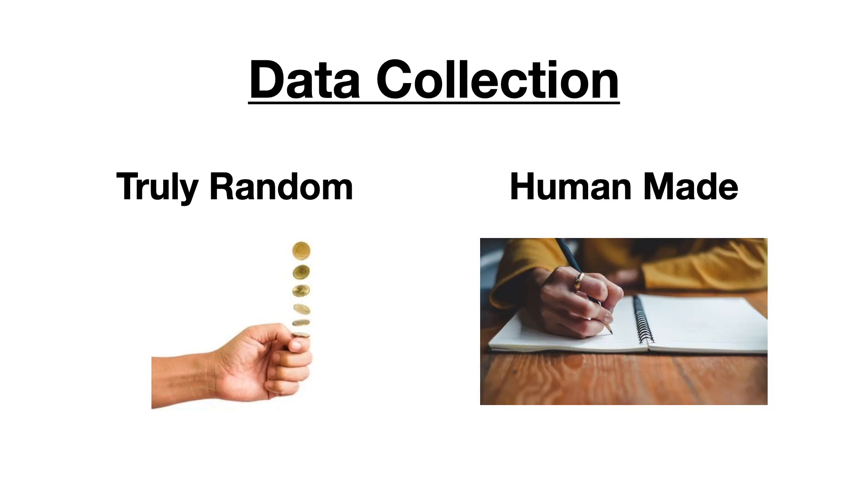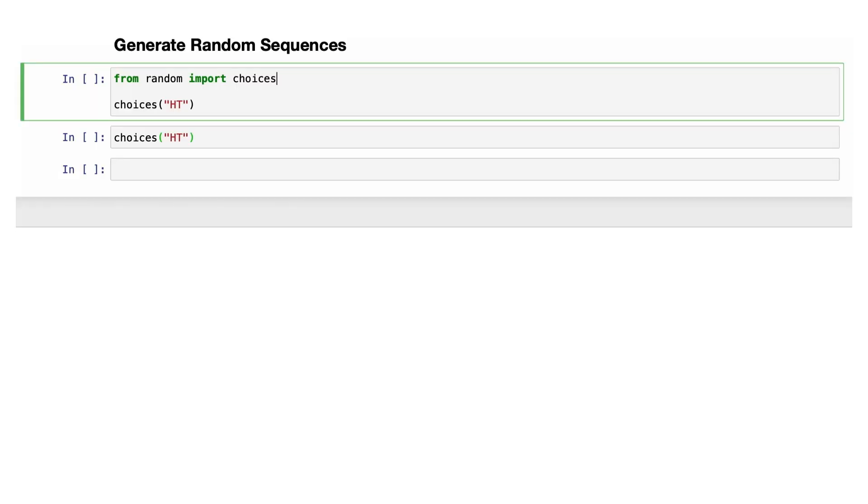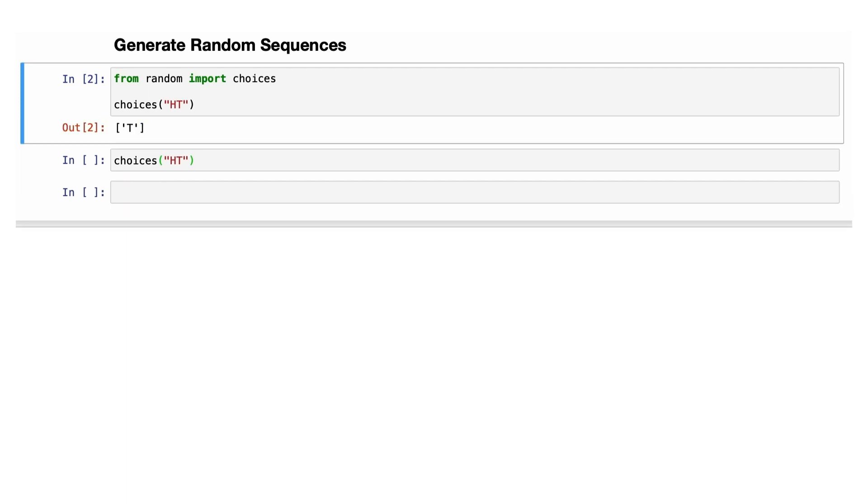The first step here was data collection. I needed to have both truly random sequences and sequences that were made up by a person. The truly random sequences are the easy part. There's a function called choices from the random library in Python that's able to choose a random element from a string or a list. For example, if we pass in an H and a T into this function, it will choose a random letter each time that we run the code. We can then pass in a parameter k, which tells the function how many times we want to draw a random letter.